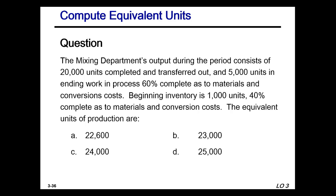The mixing department's output consists of 20,000 units completed and transferred out and 5,000 units in ending work in process, 60% complete as to materials and conversion costs. Beginning inventory is 1,000 units — we do not include that. The equivalent units of production are: 20,000 transferred out + 5,000 × 60% = 3,000, giving us 23,000 equivalent units of production.